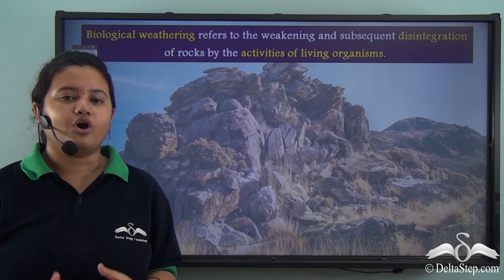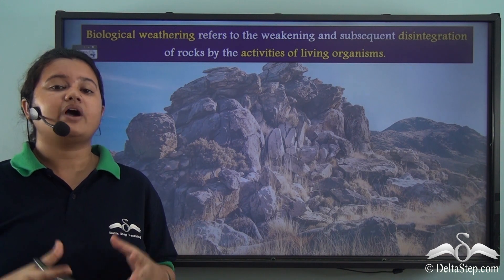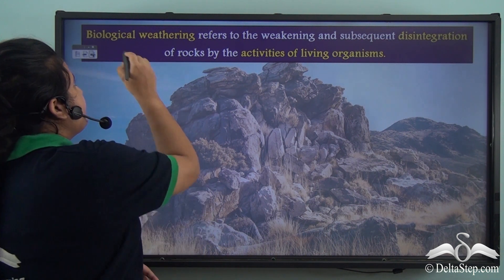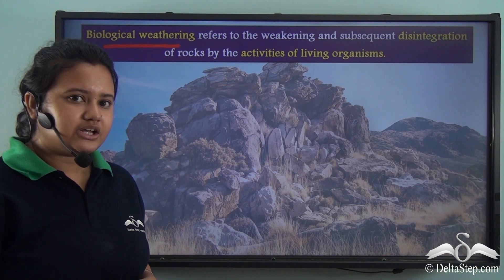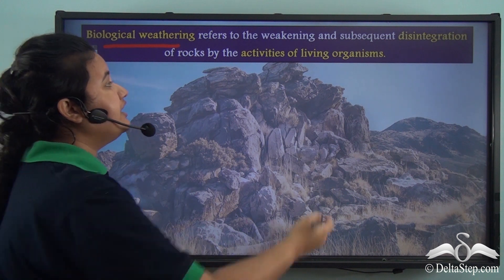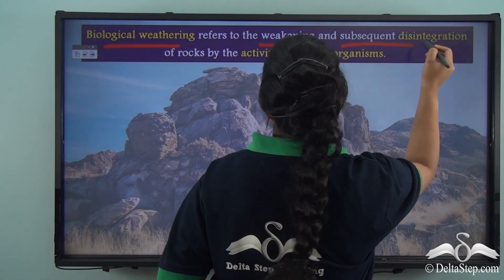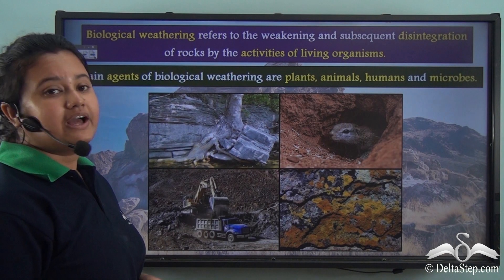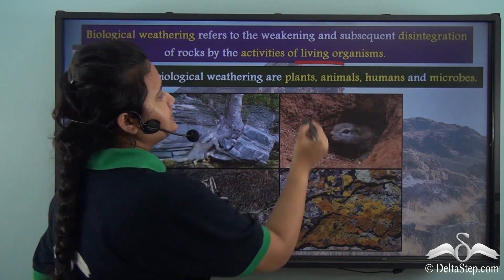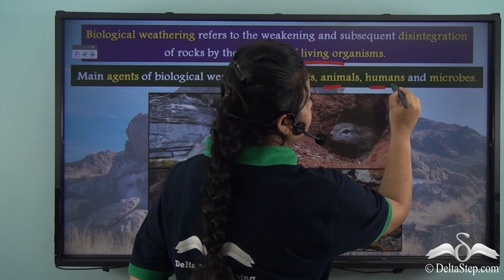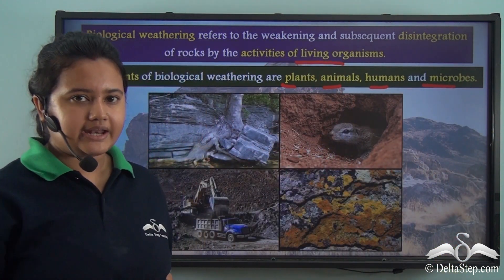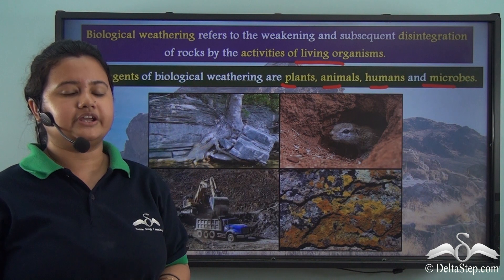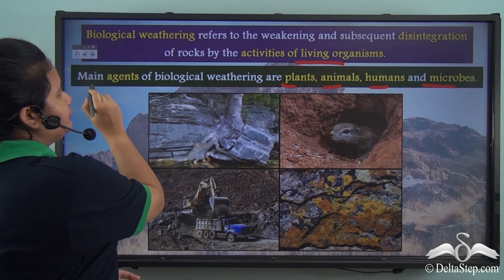The rocks may disintegrate or break down due to the action of living beings. The breaking down of rocks in this manner is known as biological weathering. Biological weathering refers to the weakening and subsequent disintegration of rocks by the activities of living organisms. Living organisms include plants, animals, humans, and microbes or microorganisms, and these are also called agents of biological weathering.